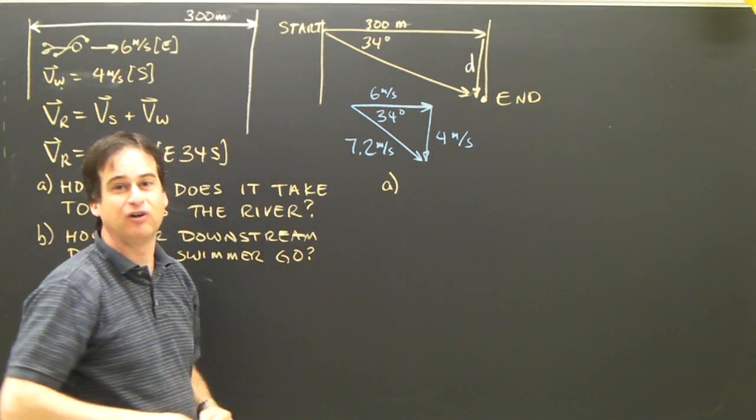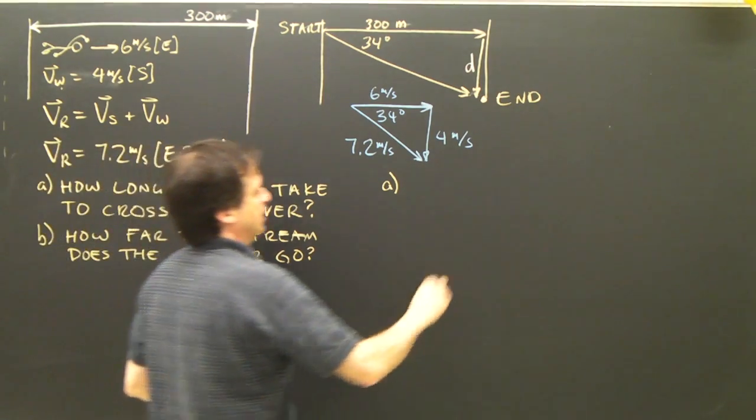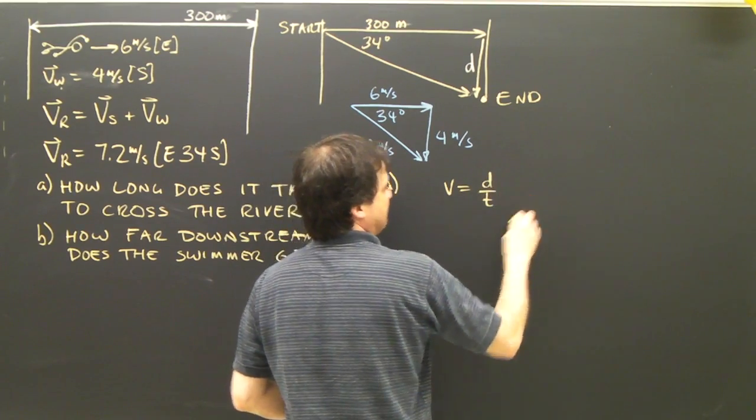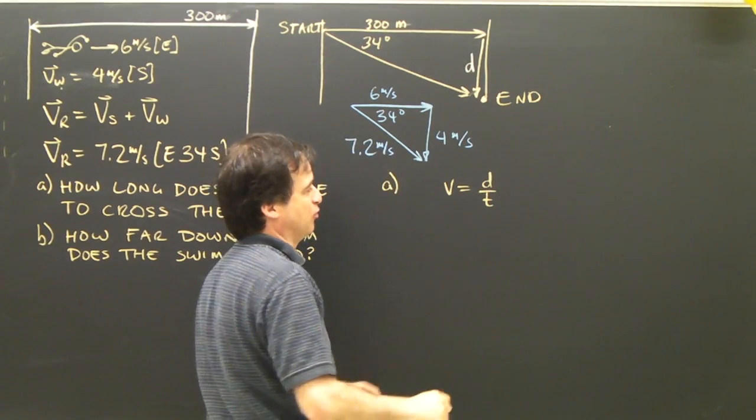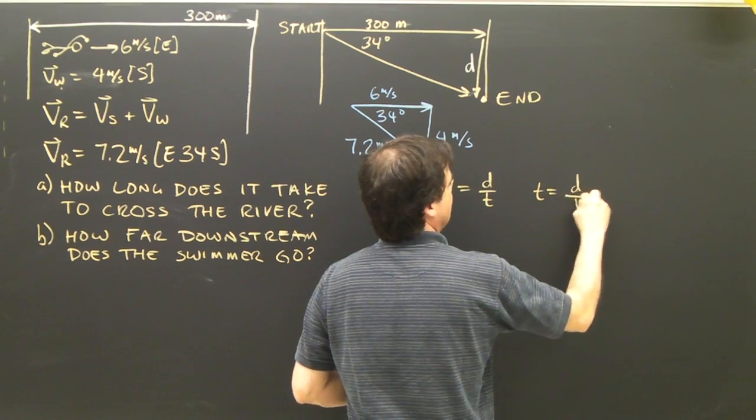For instance, I want to know how long it takes to cross the river. Well, I have a formula. V equals D over T. Because the swimmer and all this is happening is uniform motion. So I rearrange that. T equals D over V.